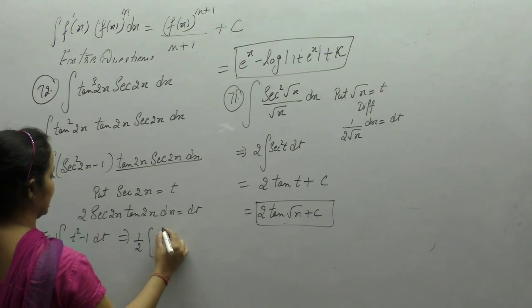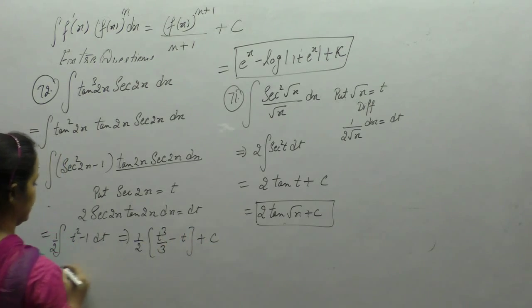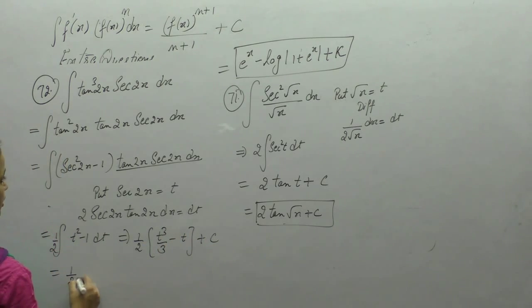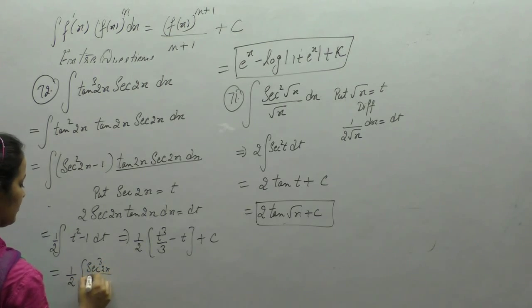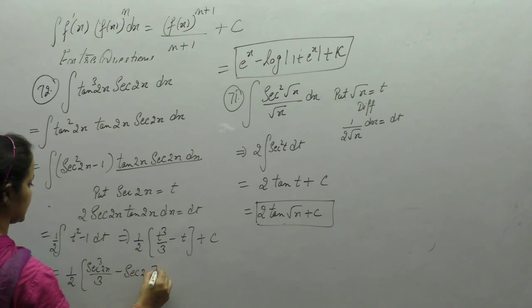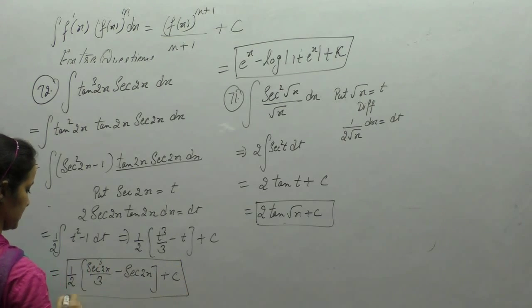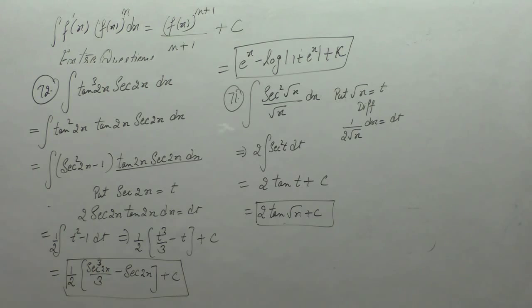Integral of t squared is t cube upon 3, and integral of 1 is t. 1 upon 2 times sec cube 2x upon 3 minus sec 2x plus c. That's 1 by 6 sec cube 2x minus sec 2x upon 2 plus c.